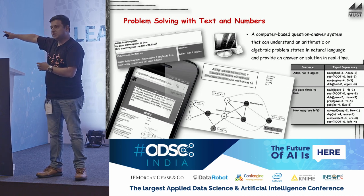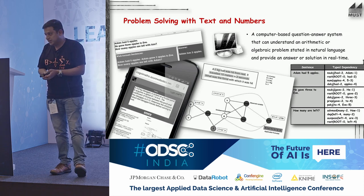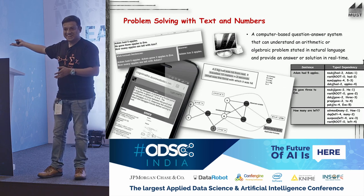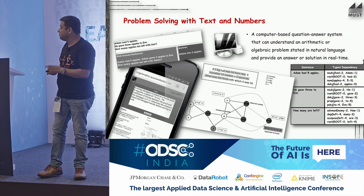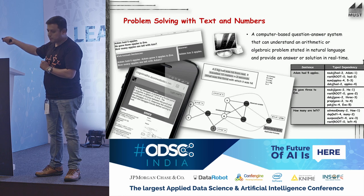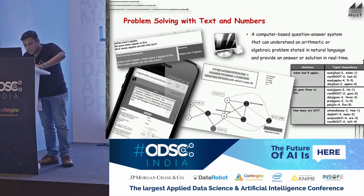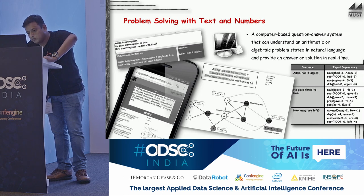We have actually implemented this, and it works well for simple addition, subtraction, division, and multiplication. You might think: what's the usefulness? Consider this harder problem: 'A 6.8 kg toboggan is kicked on a frozen pond. It acquires a speed of 1.9 meters per second. The coefficient of friction between the pond and the toboggan is 0.13. Determine the distance the toboggan travels before coming to rest.' That's much harder than the Adam and Eve problem.